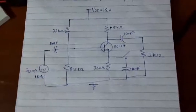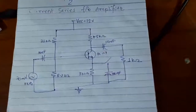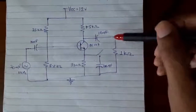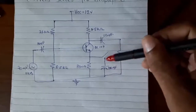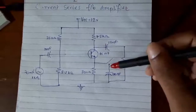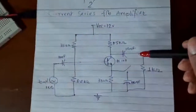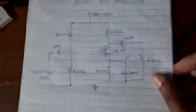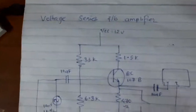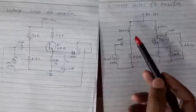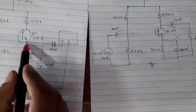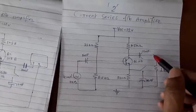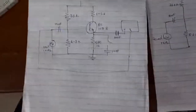In the first experiment — current series feedback amplifier — we found the output with and without feedback. When the bypass capacitor was present there was no feedback; when removed, feedback existed and the output decreased heavily. Now for experiment two, the voltage series feedback amplifier, the circuit is the same as for current series feedback. The only difference is that the output is now taken across the emitter rather than the collector.